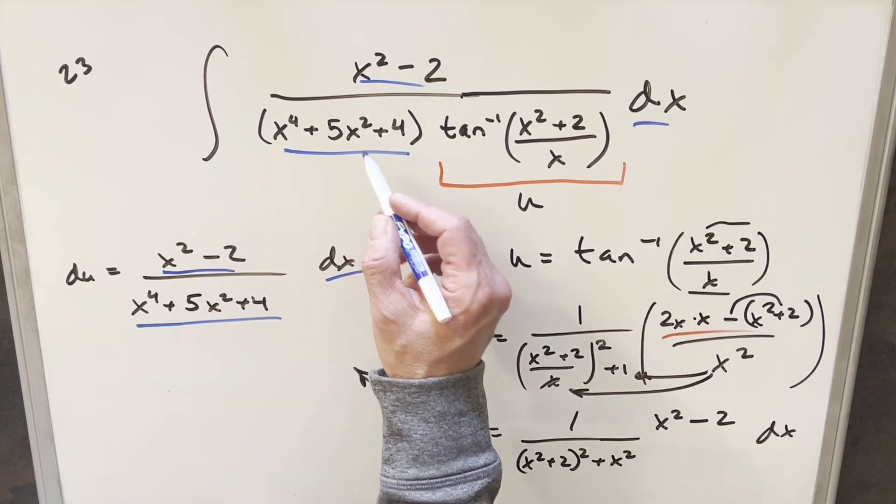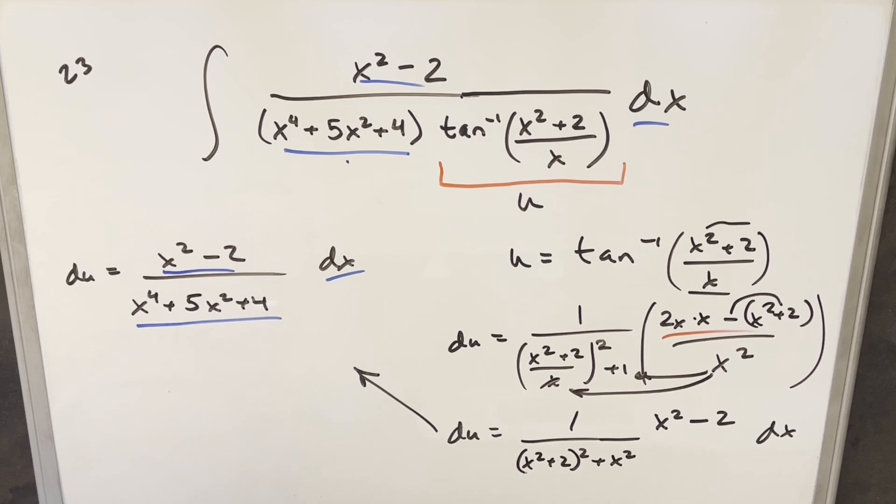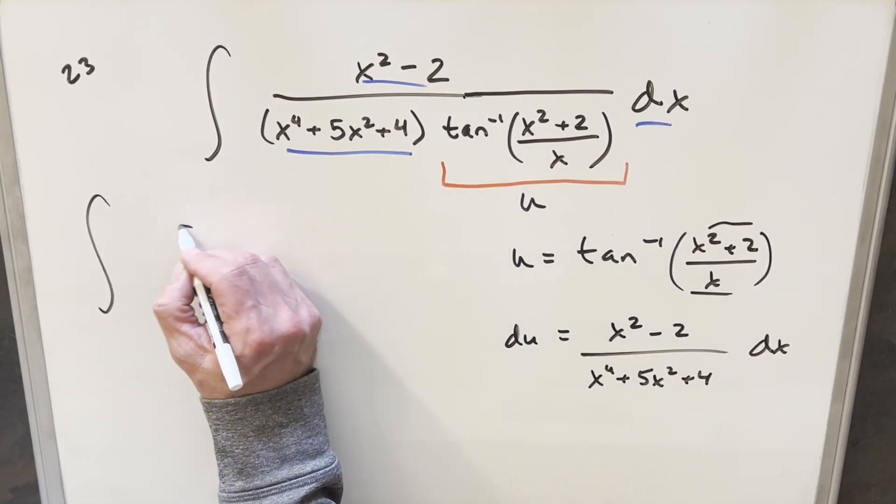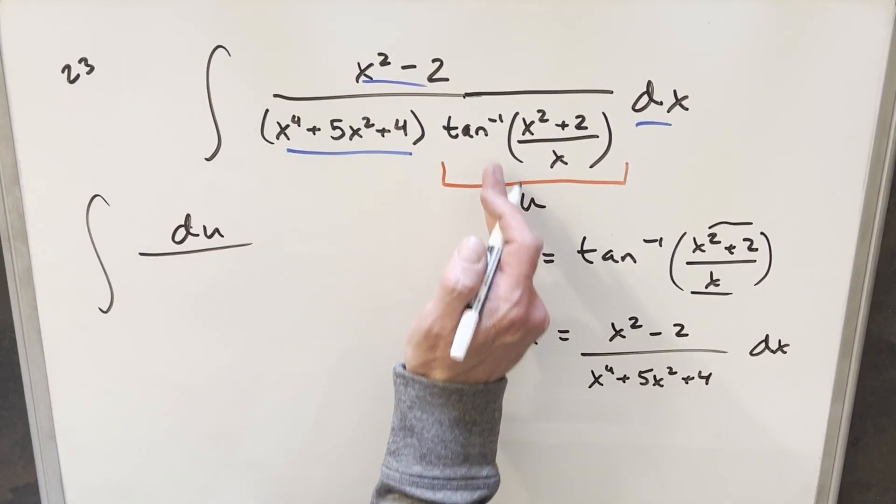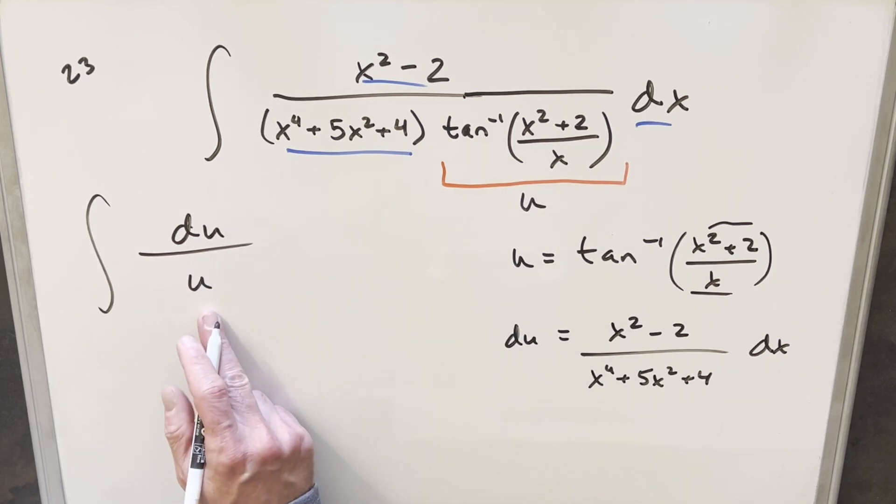So this integral is going to simplify all the way down because everything here in the blue is just du. We'll write this as du in the numerator. This piece here, this is just u. So we end up with just du over u.